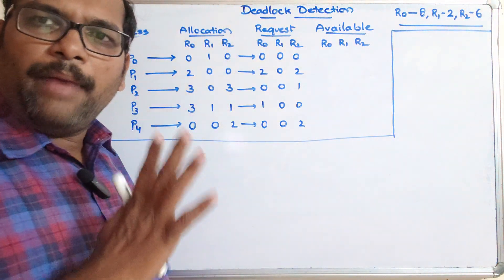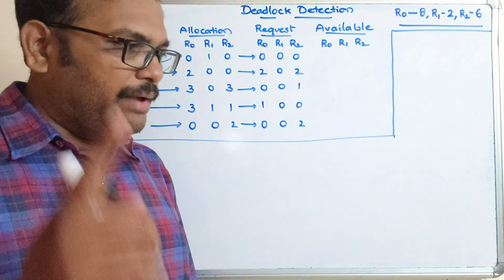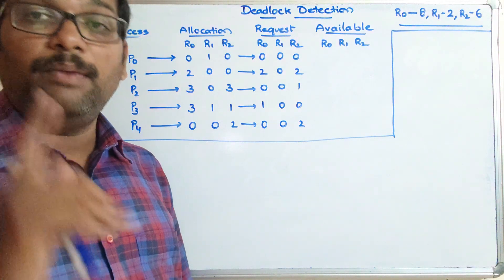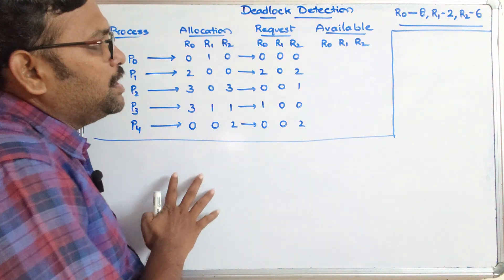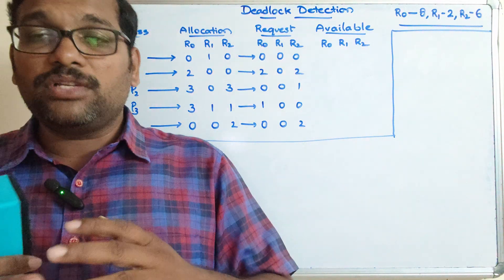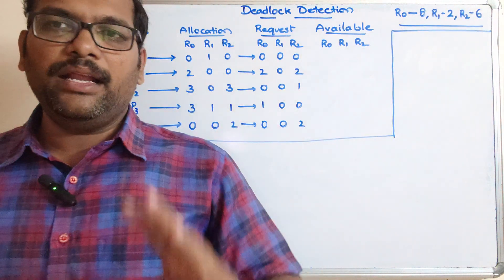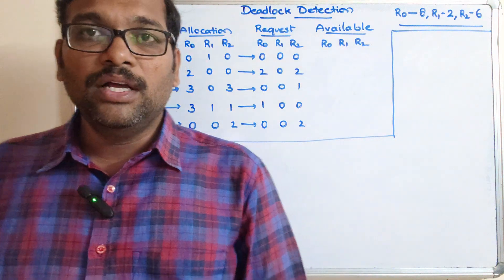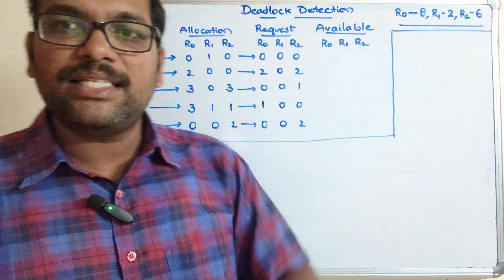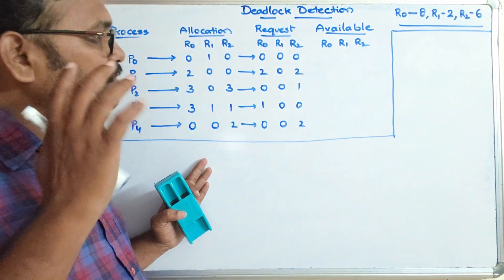Let us take a small example. This also uses the banker's algorithm — whatever we have done in the banker's algorithm, the same thing we are going to apply here. I will post the banker's algorithm link in the description so you can review it first. In this problem there are three resources: R0, R1, and R2, where R0 has 8 instances, R1 has 2 instances, and R2 has 6 instances. The allocation has already been done and the processes are in an unsafe situation.